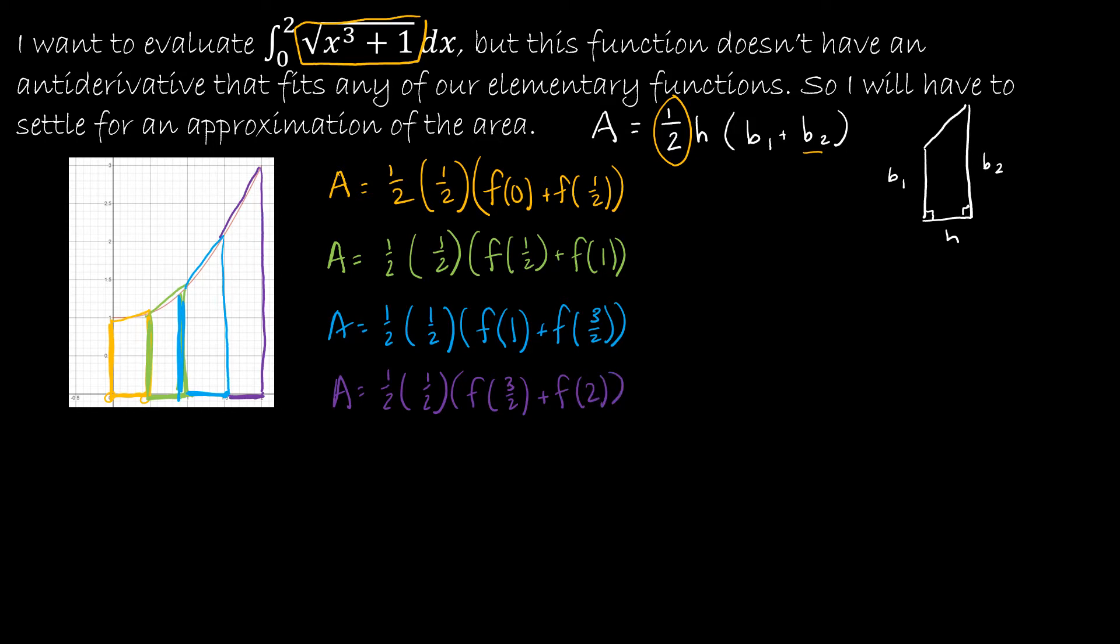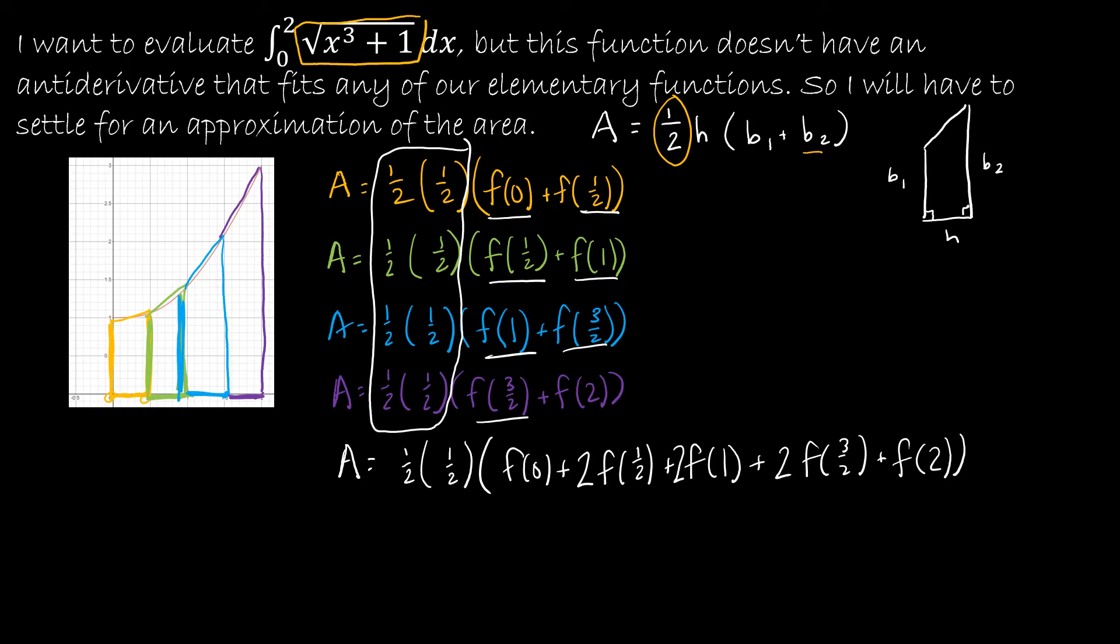And then to find the total sum I would just add all of those together. So just by taking these guys out I would have one half times one half. And then I could just simplify by adding all of the stuff on the right together. So I would have f of zero plus f of one half plus f of one half, so there's actually two f of one halves. And then f of one and f of one, two of those. And then f of three halves and f of three halves. And then just one f of two. And so what we find is that we've got the one half on the outside because that's in the formula. And remember this one half is the height. And then obviously these are all of the bases. So a couple of things to point out is all of the bases in the middle will occur twice. And again that is because it happens on the bottom side of one trapezoid and the top side of another trapezoid.